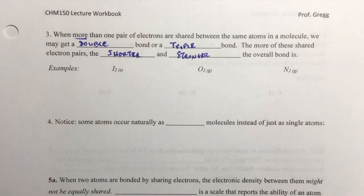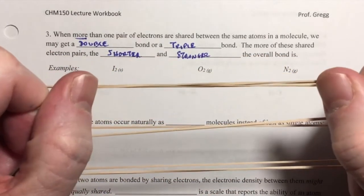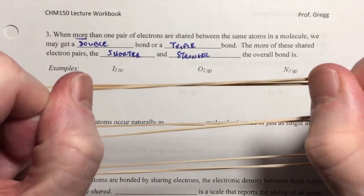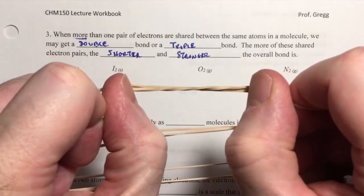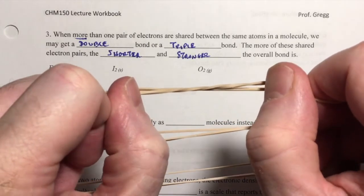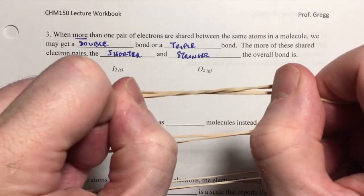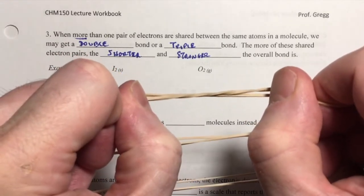And then I could even go to a triple bond. Now that I've got three rubber bands, the distance between my hands is going to be even shorter. The internuclear distance between atoms is shorter with a triple bond, and the overall attractive force and bond between them is going to be stronger because I have more of these attractions.